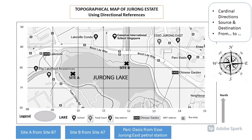The second example: Site B from Site A — now we're doing the reverse. We're standing at Site A looking towards Site B. Site B is in the North East direction — not due East, because east would be parallel to northing 30, but Site B is actually slightly above, so it's North East. Lastly, let's look at Park Oasis from Jurong East Patrol Station. The Patrol Station is in grid square 1340. Standing at the Patrol Station and looking at Park Oasis, it's not south and not east — it's in between, so it's South East.